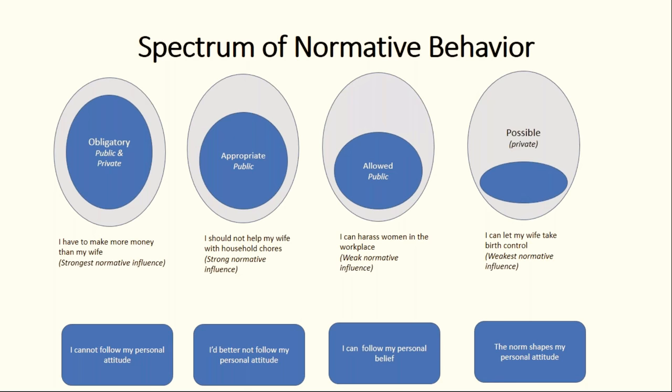Now I'd like to go into a framework that helps in better understanding the strength of influence of those norms on behavior. Social norms are not static and change as a result of various overlapping factors over time. It's also important to understand that not all social norms have the same level of influence and strength. The figure on this slide outlines how normative influence — what others think should be done — can vary on a spectrum from strongest to weaker to weakest.